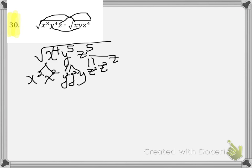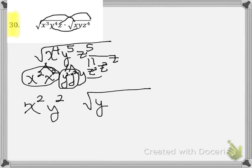So I'm going to look at my pairs. I have 2 x squared, so I'm going to bring x squared down. Then I have 2 y squared, so I'm going to bring y squared down. Underneath my square root sign, I have a y left so far. Then I have z squared, then I have a z left. Next, this is my final answer.